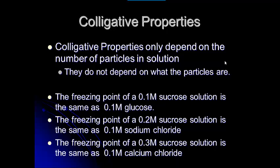The last thing we need to talk about in terms of colligative properties is that they really only depend on the number of particles in the solution — it doesn't matter what the particles are, whether it's something ionic or covalent. For example, the freezing point of a 0.1 molar sucrose solution is the same as a 0.1 molar glucose solution. They both have the same number of molecules, so the freezing point is the same because the number of particles is not changing.